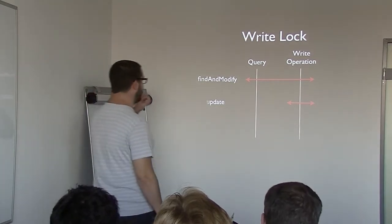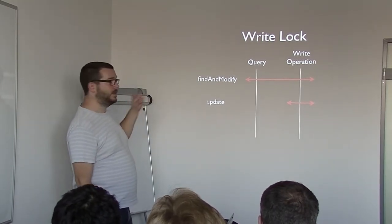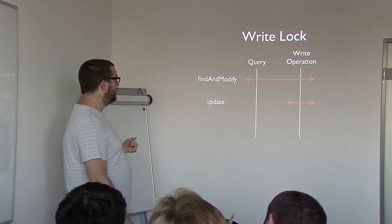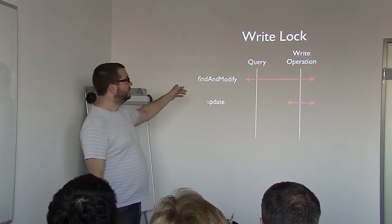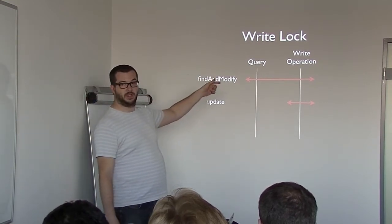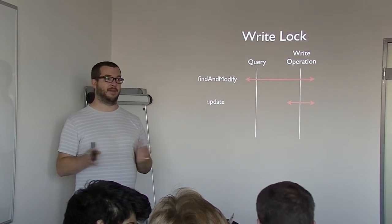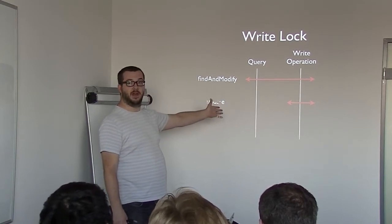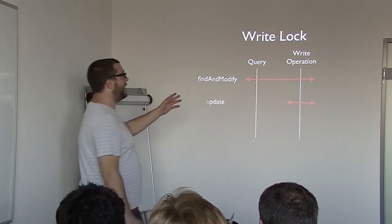One of the problems with Find and Modify has to do with locks. It's very tempting to use Find and Modify for every single update operation because it seems perfect in that it returns the document. But it comes at a cost — Find and Modify has to take a write lock for the whole duration of the operation, and it's an exclusive write lock. So as you're doing the query to fetch the document and doing the actual write operation, Find and Modify holds a write lock on the database so no other write operations can happen concurrently. A simple update, by contrast, will take a read lock and then only take a write lock during the actual update, which means other operations can be interleaved.